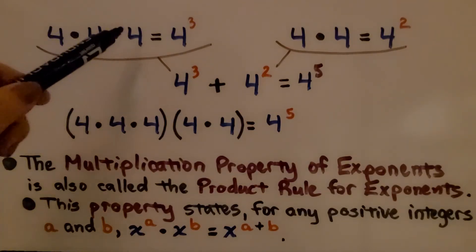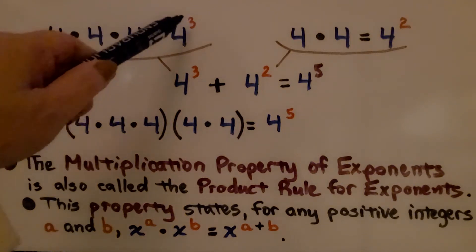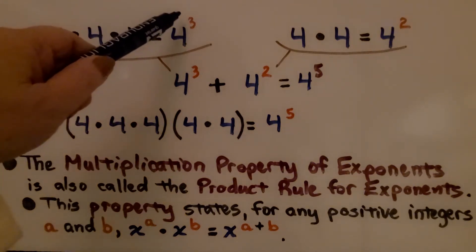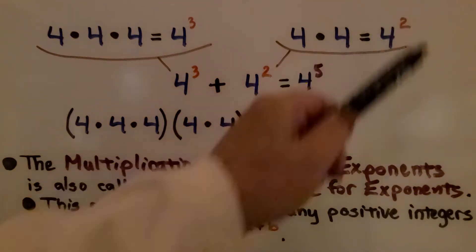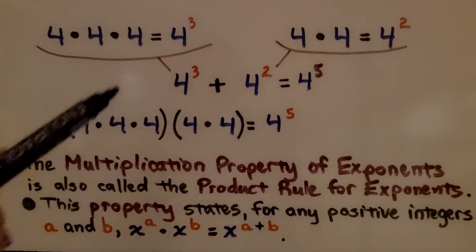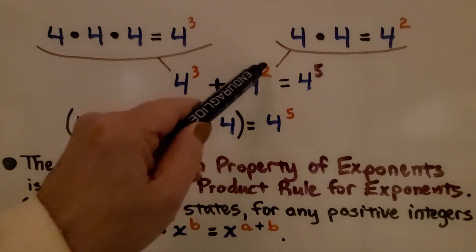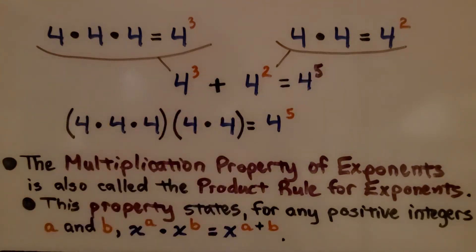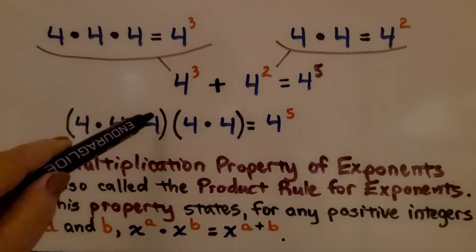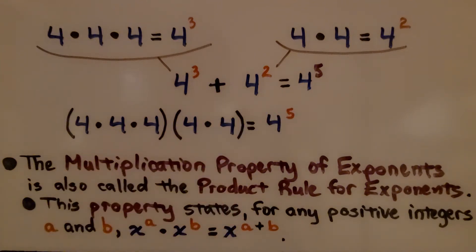Here we have 4 times 4 times 4, which can be written as 4 to the third power. Here we have 4 times 4, which can be written as 4 to the second power. We can take 4 to the third power times 4 to the second power and it will equal 4 to the fifth power. We have three fours and two more fours, making 4 to the fifth power.